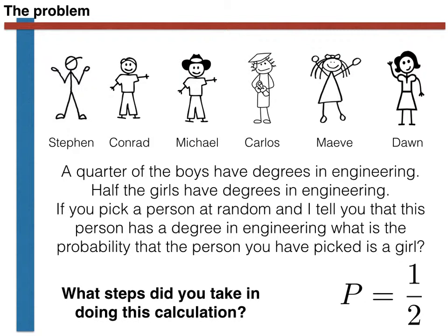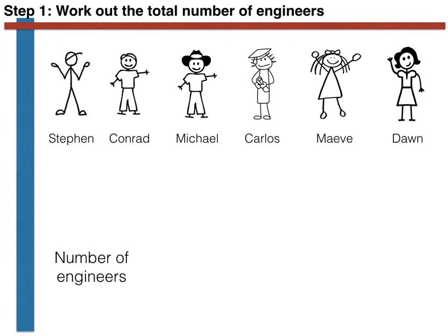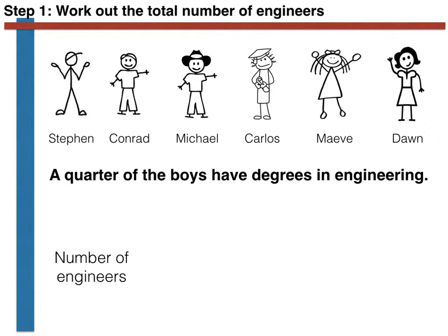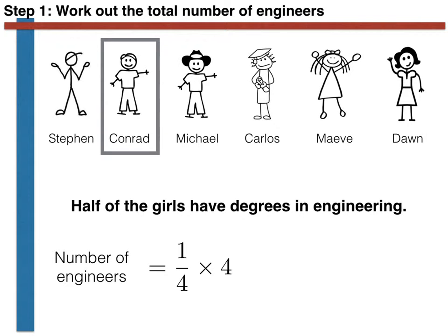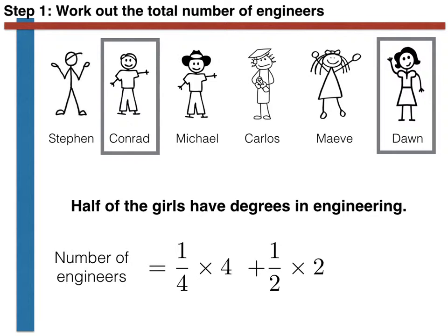Here is how I would do it. I first work out the total number of engineers. The question tells us that one quarter of the boys have degrees in engineering, so we have one over four multiplied by four male engineers — this is one. Conrad is the male engineer. We are told that half of the girls have degrees in engineering, so we know that there is one female engineer.